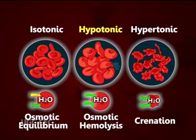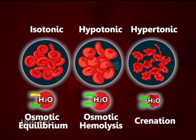A solution that has a lower solute concentration than is present in cells is said to be a hypotonic solution. In such a solution, water flows rapidly into the cells causing them to swell and burst — that is, lysis — as the plasma membrane disintegrates. Lysis of RBCs is called osmotic hemolysis. In this experiment, a study will be made of osmosis and the effects of hypertonic, isotonic and hypotonic solutions on the plasma membrane of red blood cells. The effect of solutions on the cells will be determined microscopically.